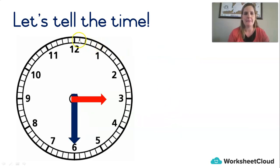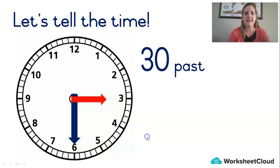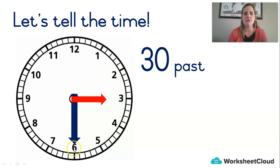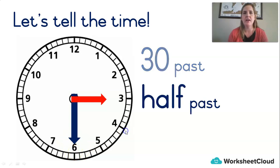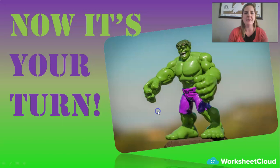Last one: 5, 10, 15, 20, 25, 30 — 30 past, 30 minutes past, whatever hour the hour hand is pointing to. Do you remember what is the special way we say 30 past? Half past — because it's half the clock. Okay, that was lots about time.